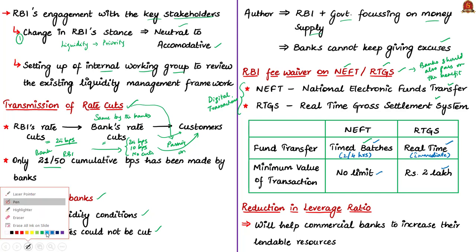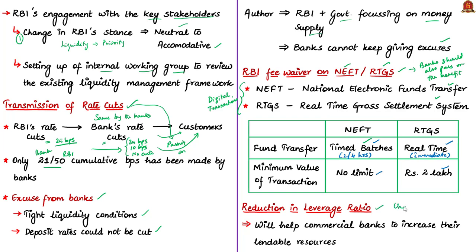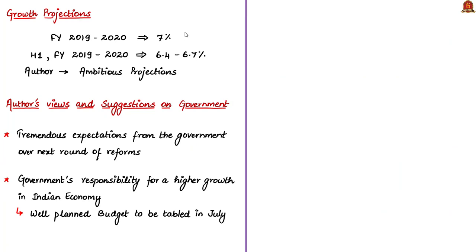The author makes positive remarks on RBI's decision to reduce the leverage ratio under Basel norms for banks, as this will help commercial banks increase their lendable resources. The author also notes the projected growth rate for fiscal year 2019–2020: growth rates have been lowered to 7% from the 7.2% projected in April's MPC meeting, with first-half growth estimated at 6.4% to 6.7%. The author notes this is a very ambitious projection when current trends in the economy are not favouring higher growth.